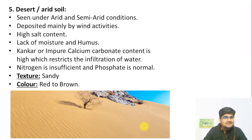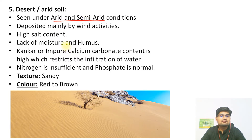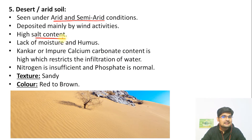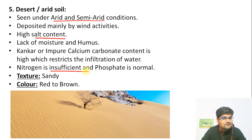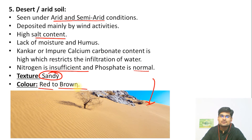Then we have desert soil or arid soil, seen under arid and semi-arid conditions. Here evapotranspiration is high and rainfall very low, resulting in high salt content, alkaline soil, and impure calcium carbonate-containing soil. Nitrogen is also insufficient. Phosphate is normal, texture is completely sandy, and color is red to brown.